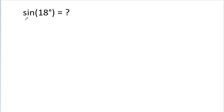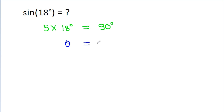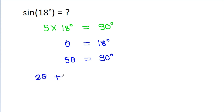In this video, we have to find the value of sine 18 degrees. In multiples of 18 degrees, we know the value of sine 90 degrees, and 5 times 18 degrees is equal to 90 degrees. So if we assume theta is equal to 18 degrees, then we get 5 theta is equal to 90 degrees. Since we don't know the formula for sine 5 theta, we can write 5 theta as 2 theta plus 3 theta, equal to 90 degrees.